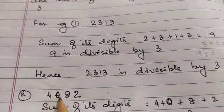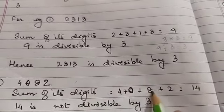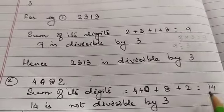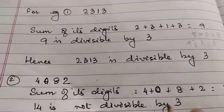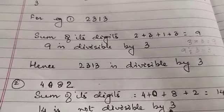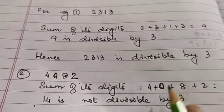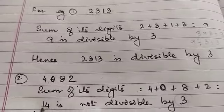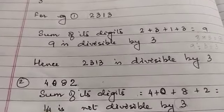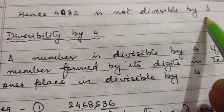Take for example 4082. The sum of the digits is 4 + 0 + 8 + 2 = 14. Is 14 divisible by 3? No, because 14 does not appear in the table of 3: 3, 6, 9, 12, 15 — 14 is not there. So 14 is not divisible by 3, and therefore 4082 is not divisible by 3.